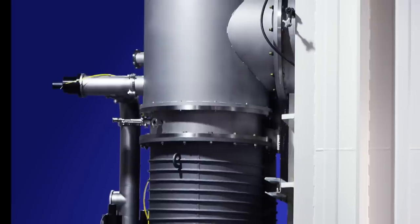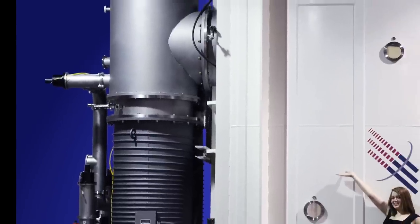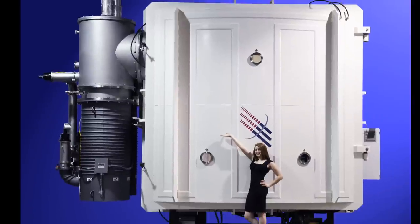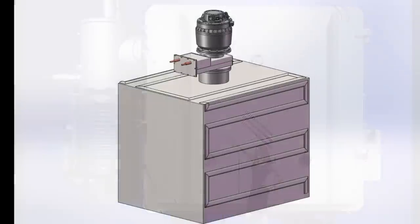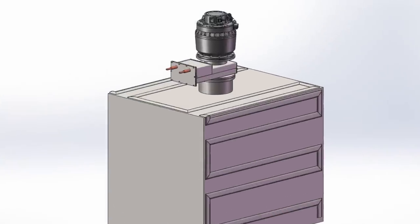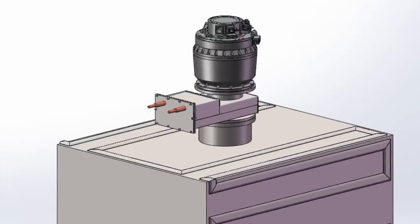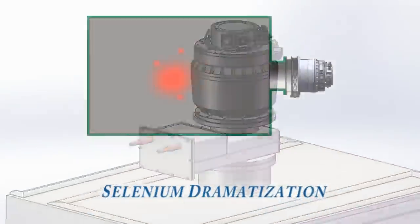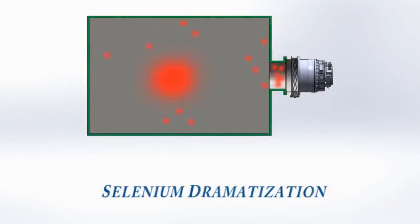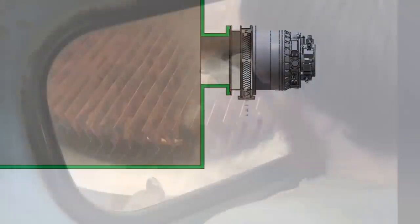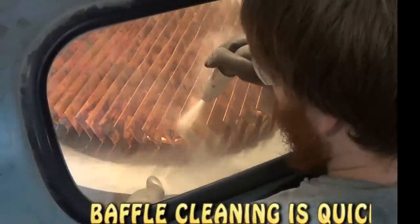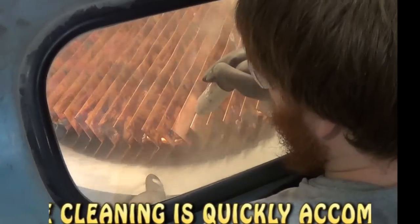This will eliminate nearly 100% of the oil from migrating from the diffusion pump into the process. Another common application is to use a baffle to protect a pump in a coating system. The process material will stick to all exposed surfaces, especially those that are cool. A chilled baffle between the process and a turbo pump will protect it from process contamination.